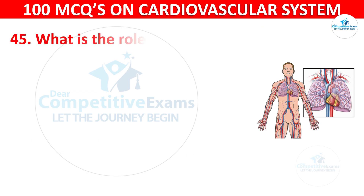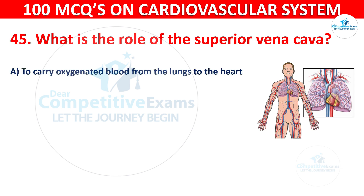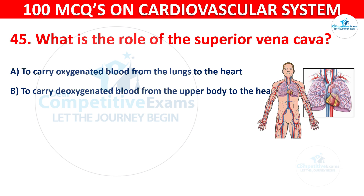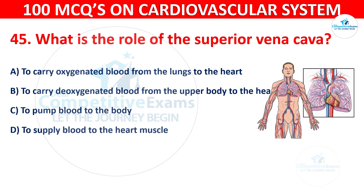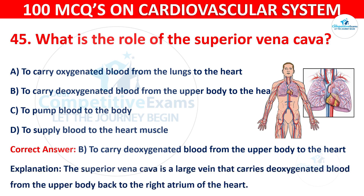Question 45: What is the role of the superior vena cava? Options are: To carry oxygenated blood from the lungs to the heart, To carry deoxygenated blood from the upper body to the heart, To pump blood to the body, or To supply blood to the heart muscle. The correct answer is B, to carry deoxygenated blood from the upper body to the heart. The superior vena cava is a large vein that carries deoxygenated blood from the upper body back to the right atrium of the heart.